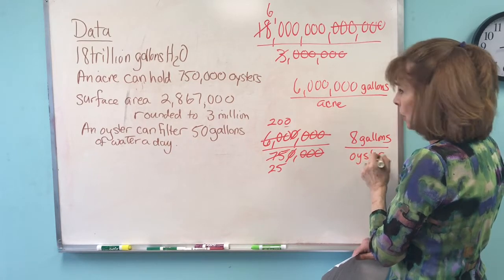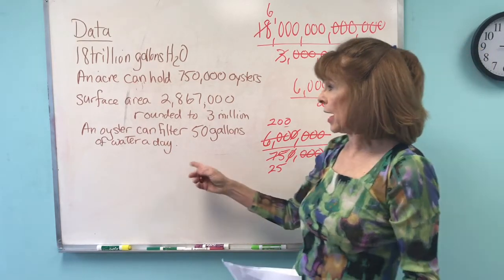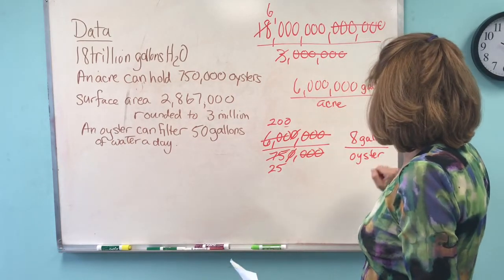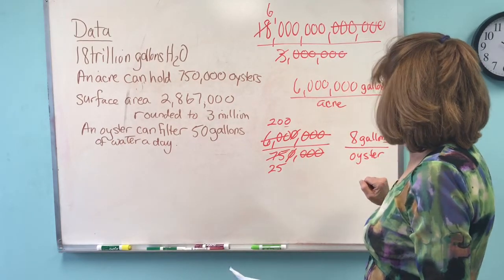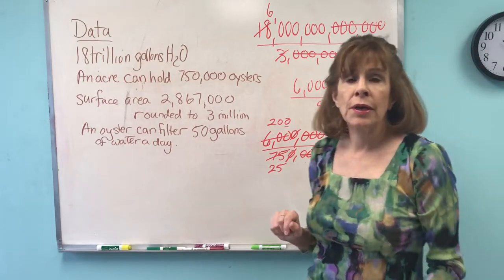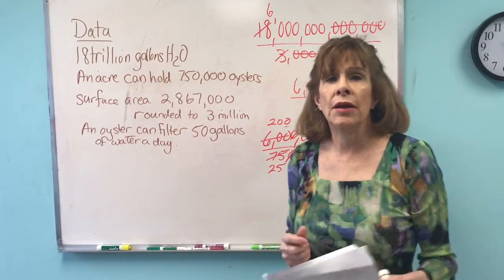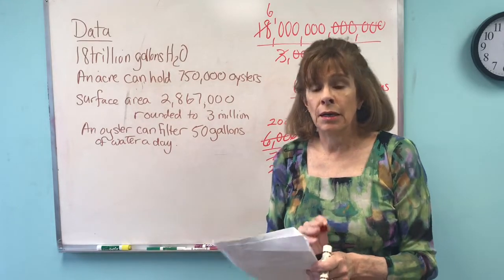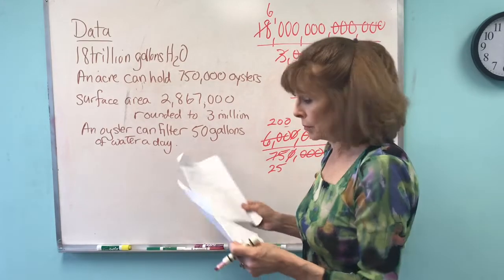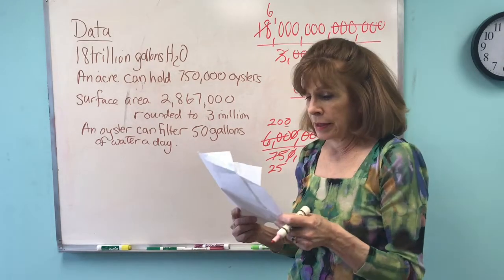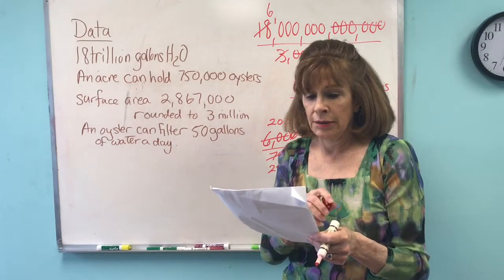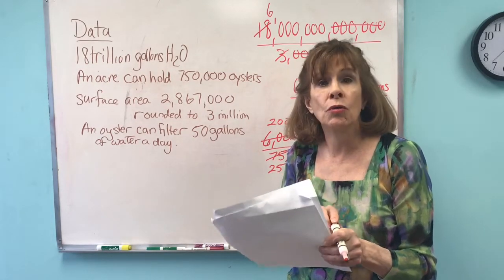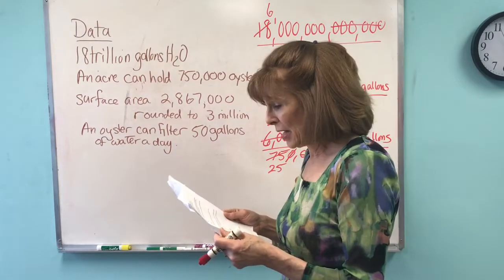That's plenty, according to the data that we have. An oyster can filter 50 gallons of water a day, so 8 gallons of water per oyster gives a lot of room. So yes, theoretically the Chesapeake can hold enough oysters to filter the whole Chesapeake Bay in one day.